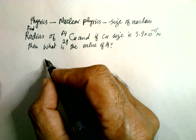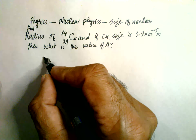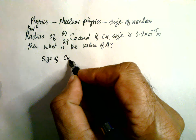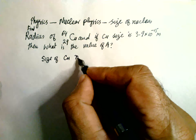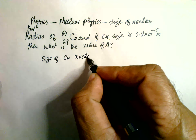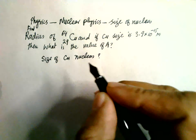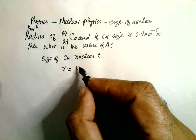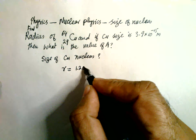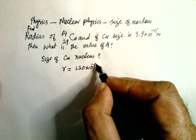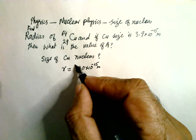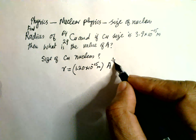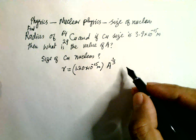So, for the size of the copper nucleus, we have to find — the radius formula is given as 1.20 × 10⁻¹⁵ meter, into A raised to power one-third, where A is the atomic mass number.